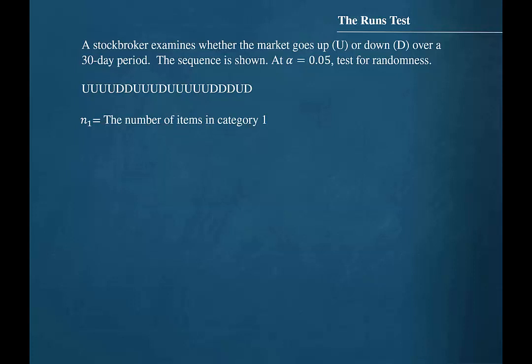In order to test for randomness, we are going to have to find N1, the number of items in category 1, and N2, the number of items in category 2. If we let N1 represent the days where the stock market went up, then N1 will be 13. If we let N2 represent the number of days where the stock market went down, then N2 will be 7.